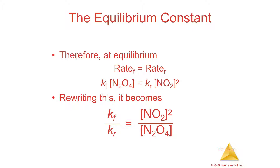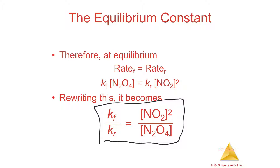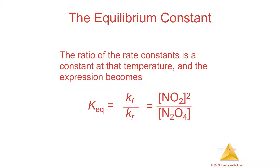Since they're equal to each other, if you get the two rate constants on one side — divide by Kr and divide by the concentration of N2O4 — you end up with this expression: Kf divided by Kr equals the square of the product's concentration over the concentration of the reactants.